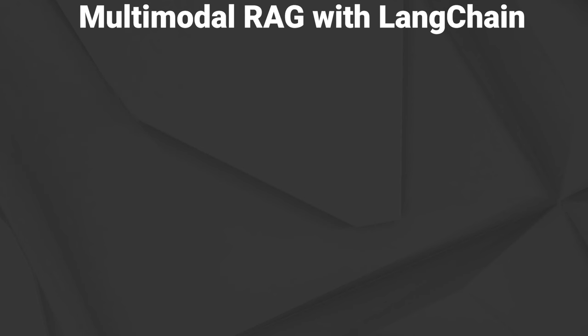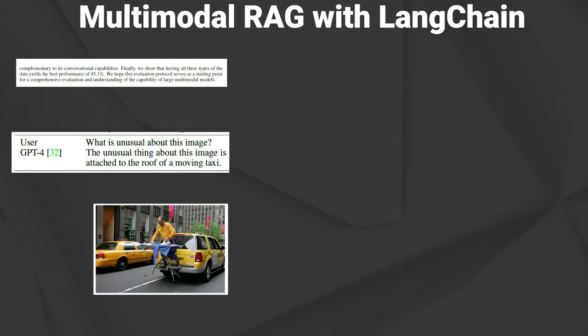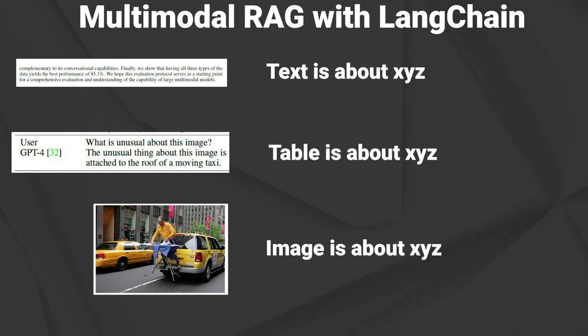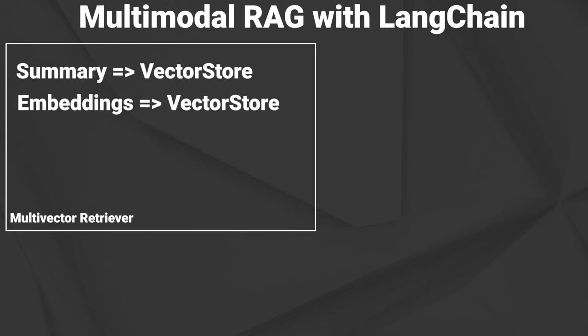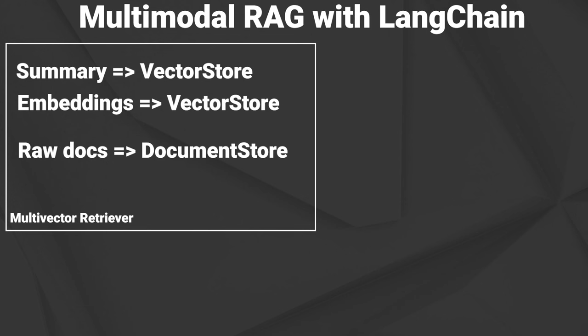So let's first talk about one of the possible approaches in theory. We extract all text elements, table elements and images from the PDF. Then we create a summary for each element using an LLM. For text elements and tables we can use a language model, and for the images we can use the new GPT-4 Vision model. Next we take the summaries and store them into a multi-vector retriever together with the corresponding embeddings. We also store the raw documents there.